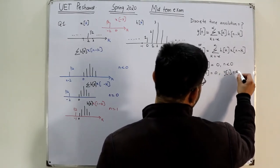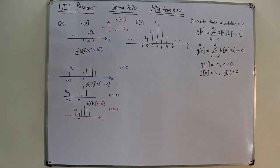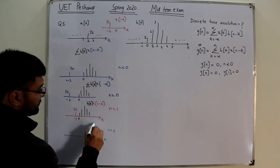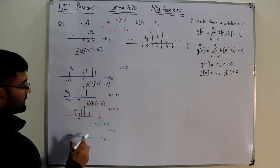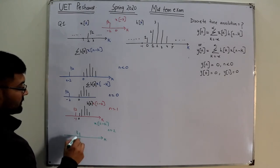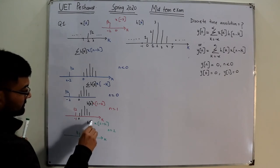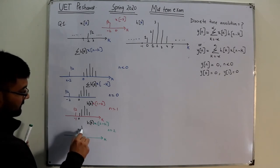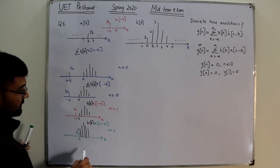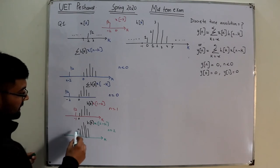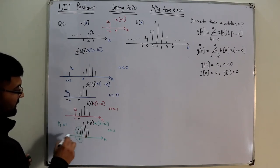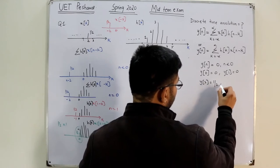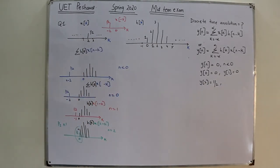For n equal to two: X of 2 minus K is located at zero, with value one-half. H of K also starts at zero with value one. We have a single overlap at zero — one-half multiplied by one — so y of two equals one-half.